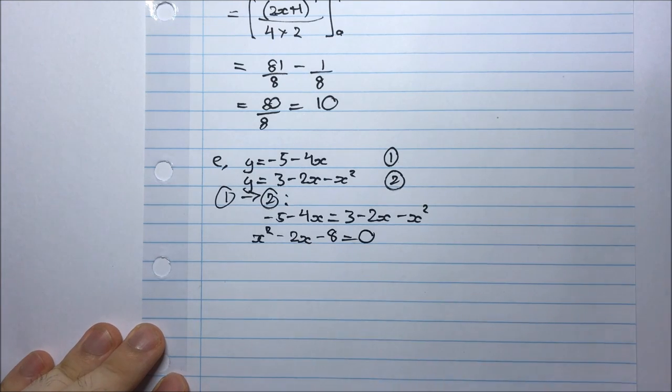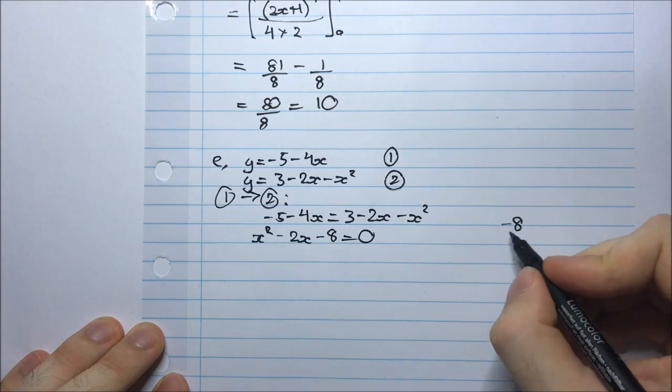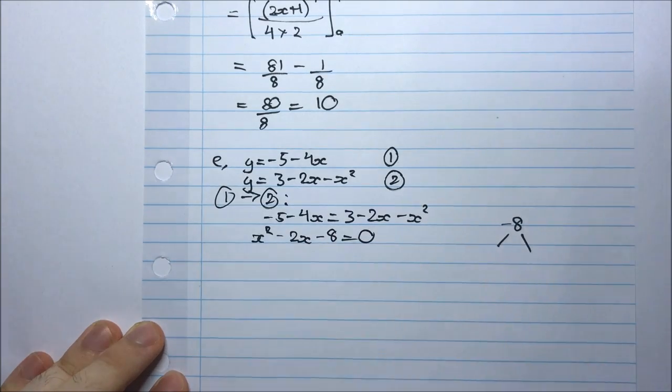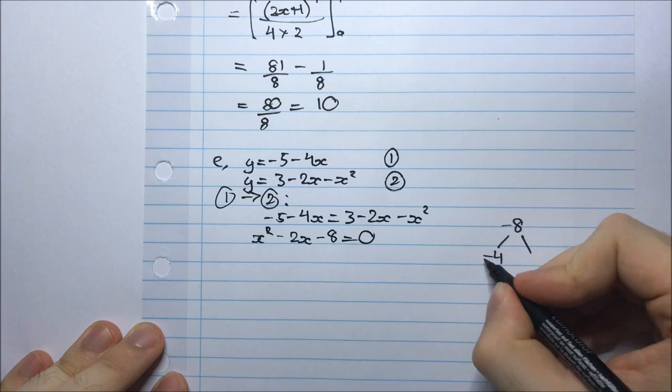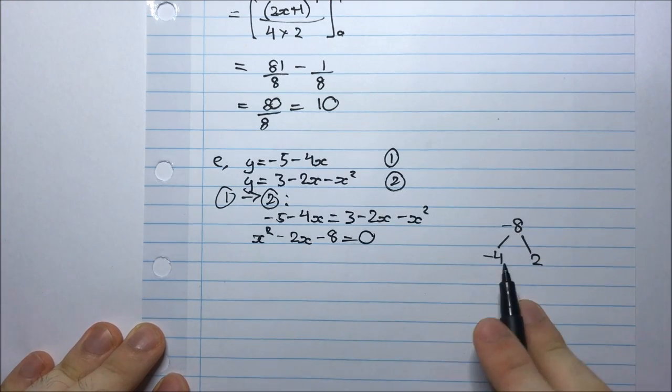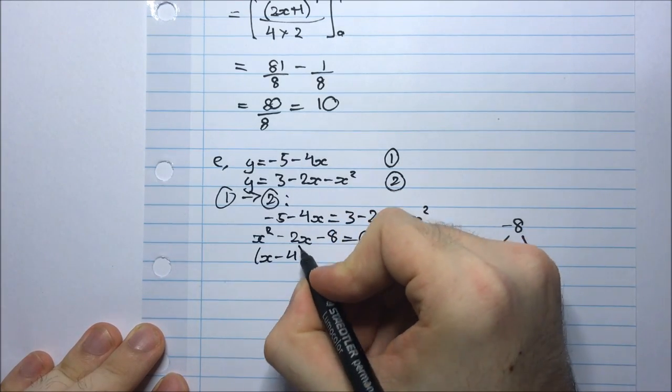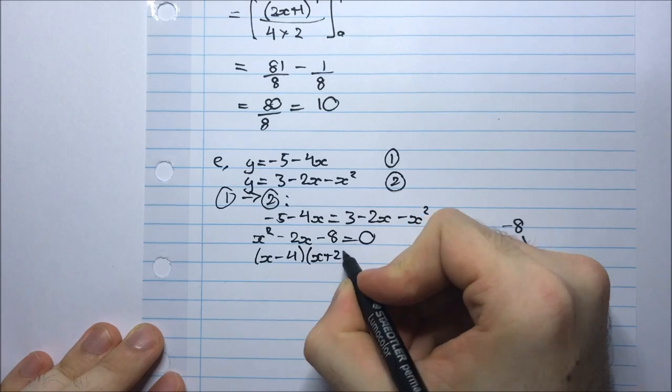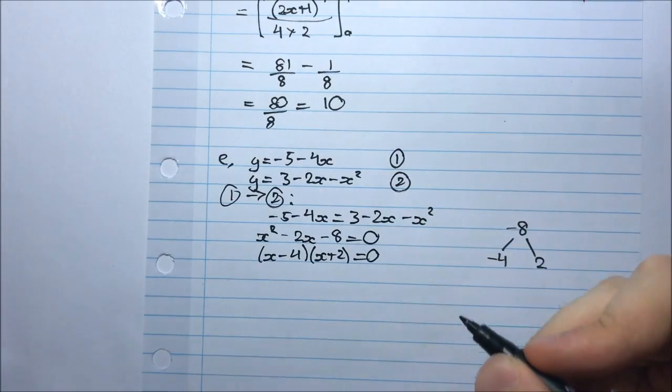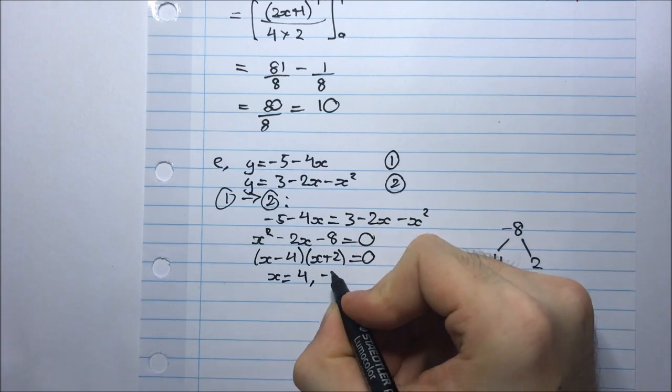Now this is a quadratic, I'd like to factorize this. So I need 2 numbers that multiply to give -8 and add to give -2. Those numbers would be -4 and 2. If I multiply these together I get -8, if I add them I get -2. So I have (x - 4)(x + 2) = 0. And so therefore I have x = 4 or -2.